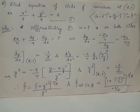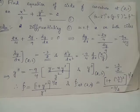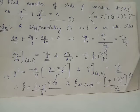Thus we have radius of curvature rho at (2,3) equals 1 plus (negative 3 by 2) whole square, the whole raised to 3 by 2, divided by negative 3 by 2. When you take LCM here, it becomes (4 plus 9) divided by 4, the whole raised to 3 by 2. Also, negative 3 by 2 in the denominator becomes negative 2 by 3 when taken to the numerator.